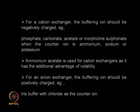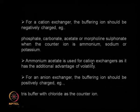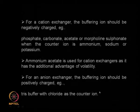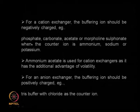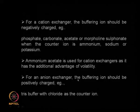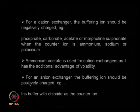For a cation exchanger, the buffering ion should be negatively charged — like phosphate, carbonate, acetate, or morpholine sulfonate — when the counter ions are ammonium, sodium, or potassium. Ammonium acetate is commonly used for cation exchangers because of its additional advantage of volatility. For an anion exchanger, the buffering ion should be positively charged, like Tris buffer with chloride as the counter ion.